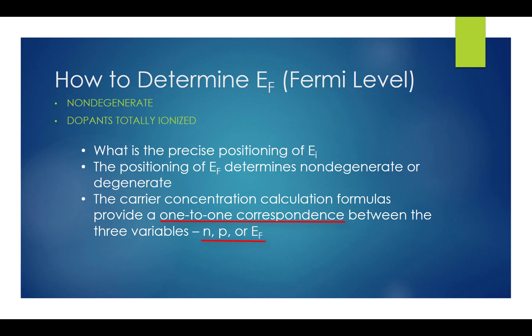So by having any one of the three variables N, P, or EF, we can determine the remaining two variables under equilibrium conditions.